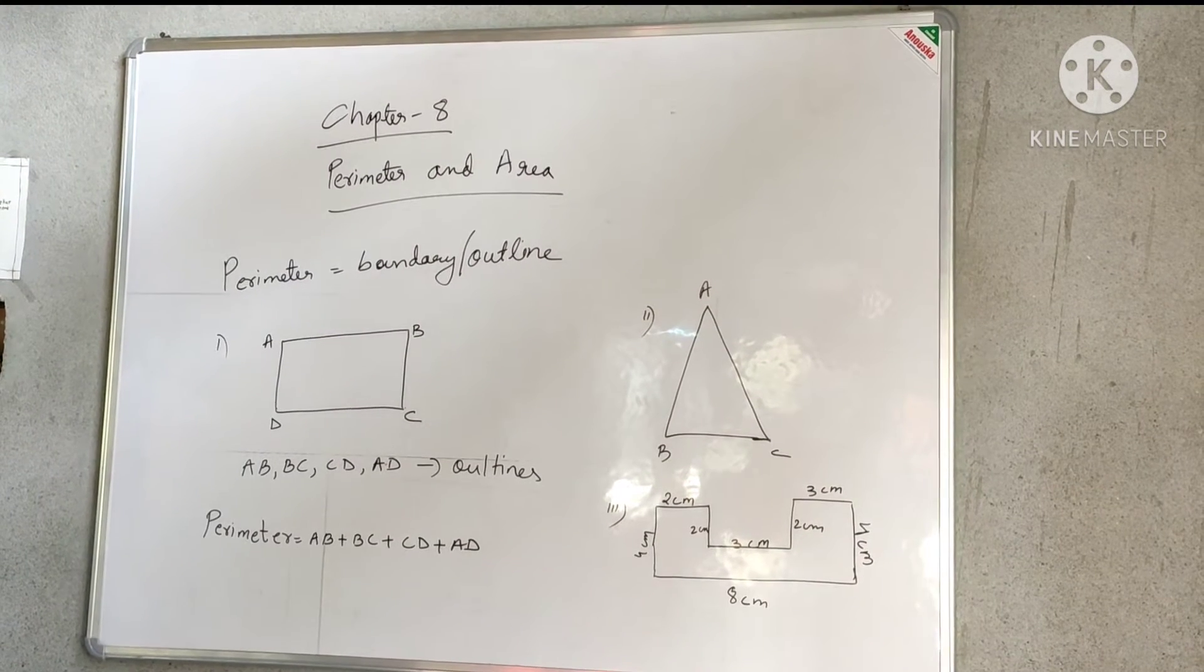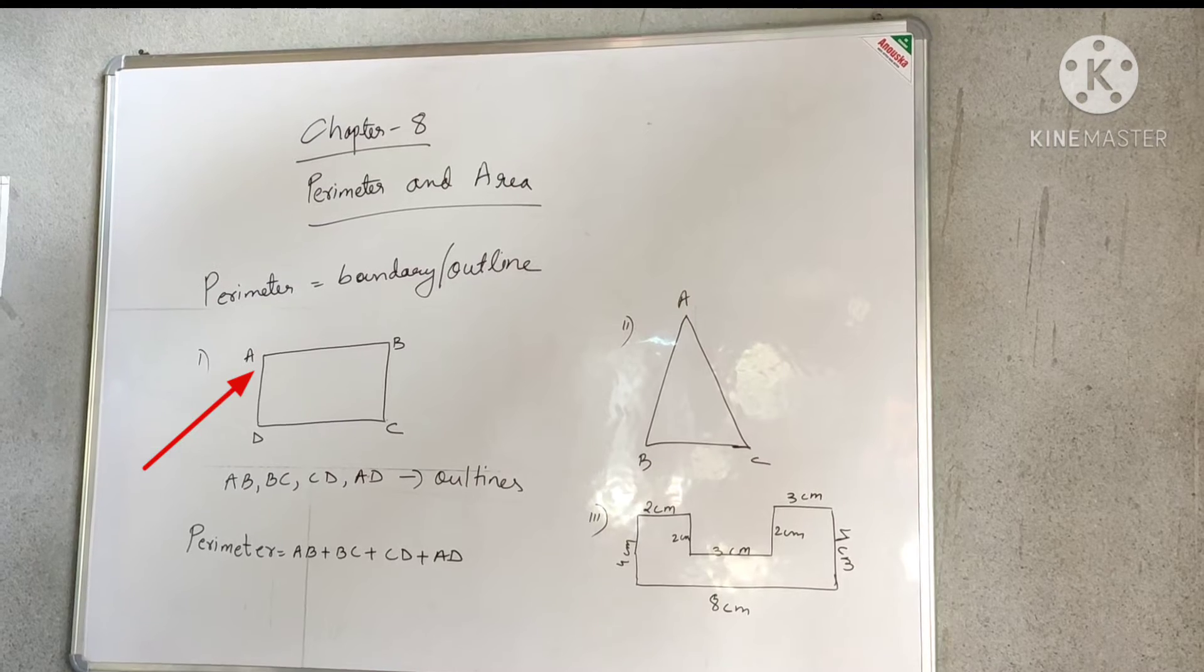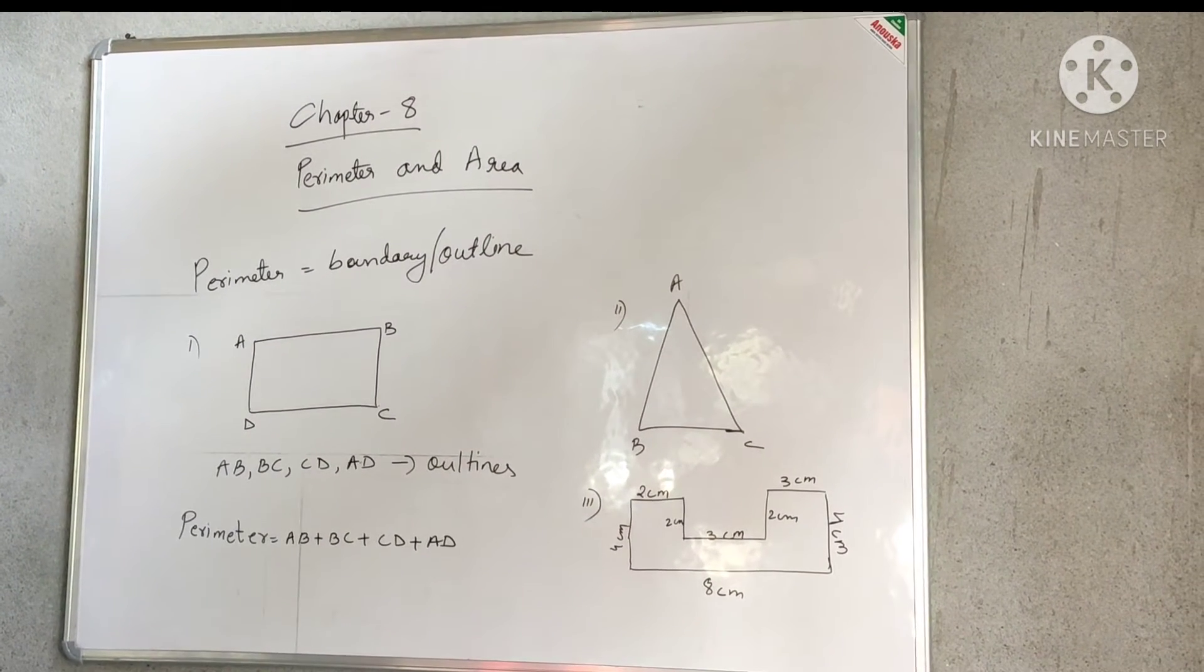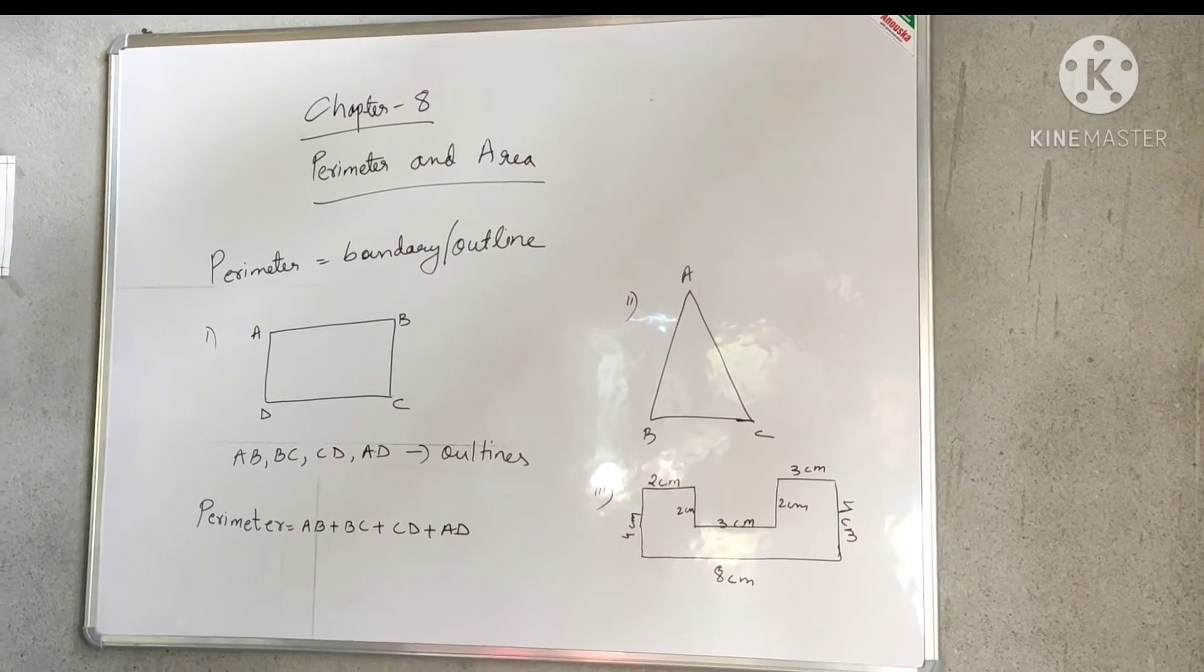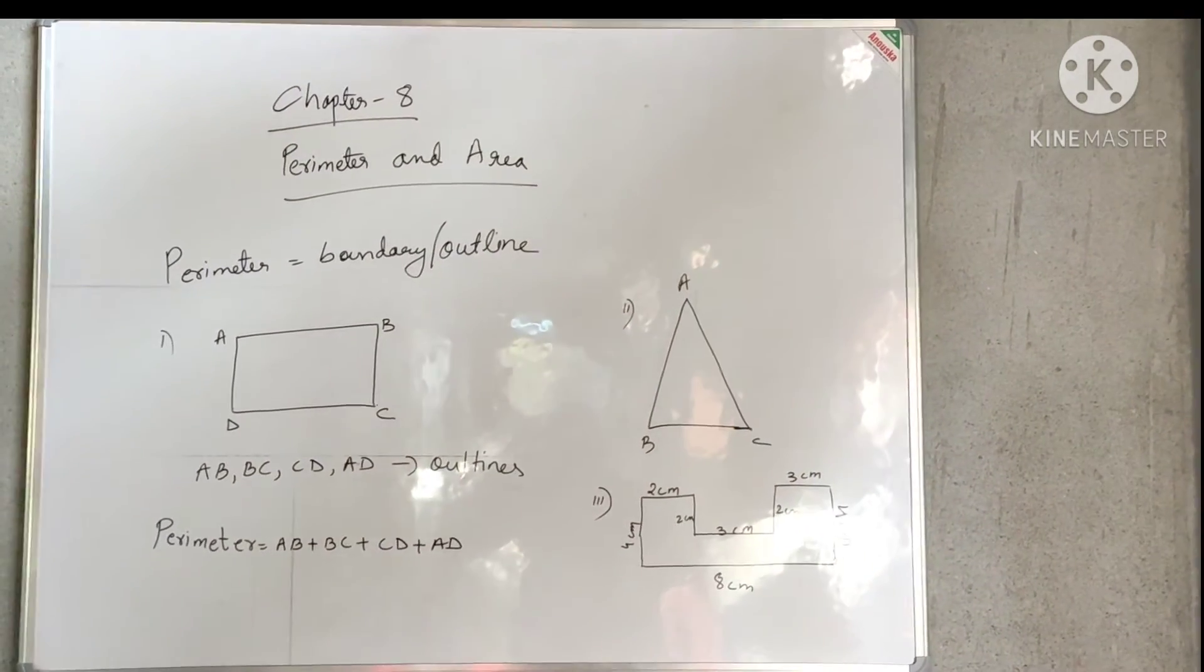In figure 1, you can see it is given A, B, C, and D. So it means AB, BC, CD, and AD are the outlines of that particular figure. So perimeter will be AB plus BC plus CD plus AD.